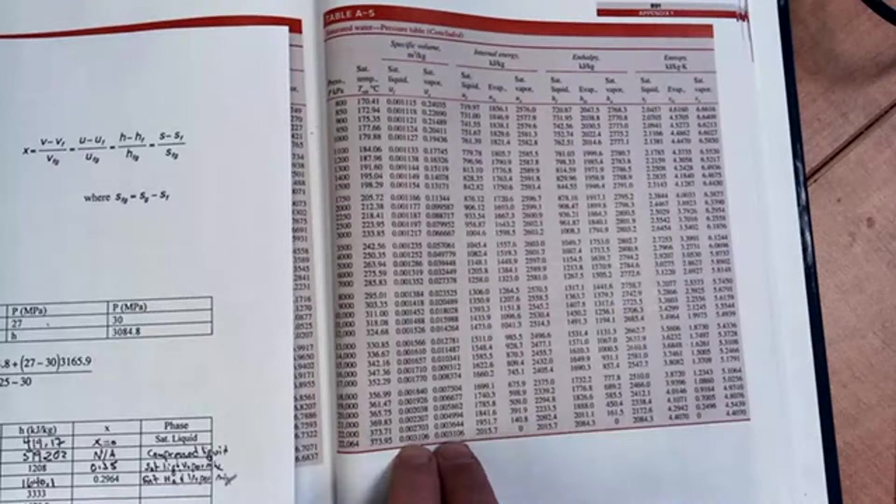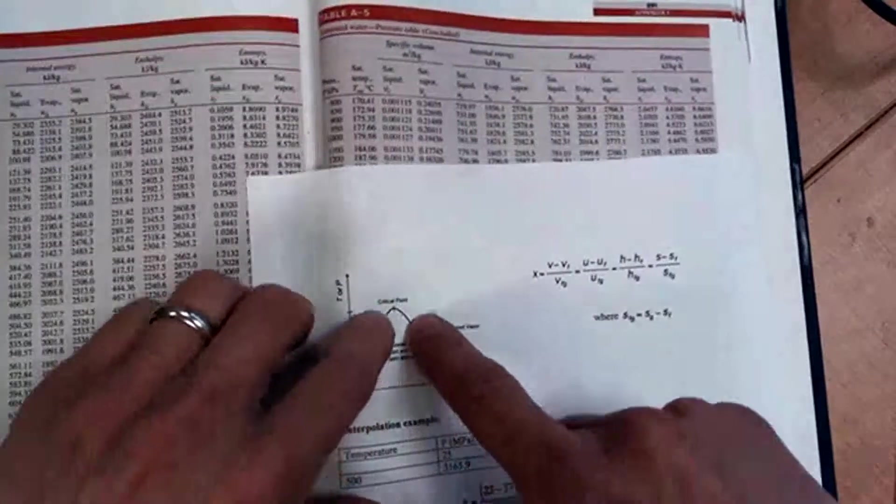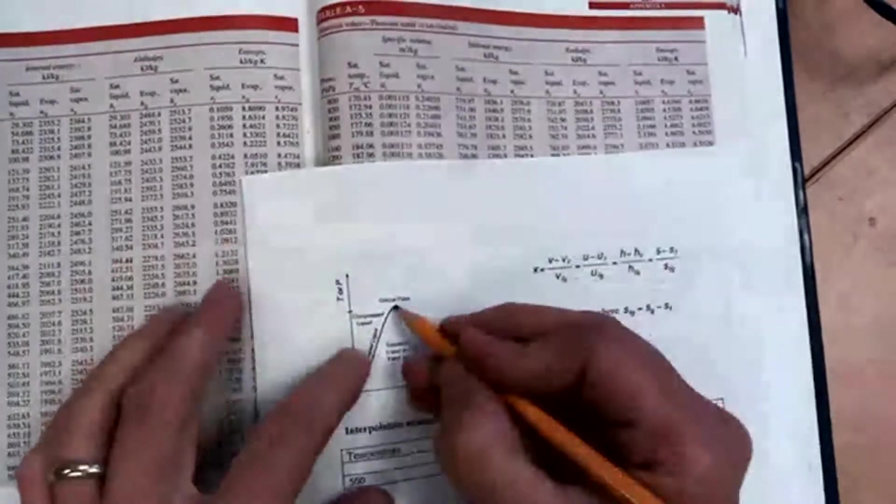That means that the saturated liquid line and the saturated vapor line have approached each other and they meet at the critical point. That's what the critical point means.